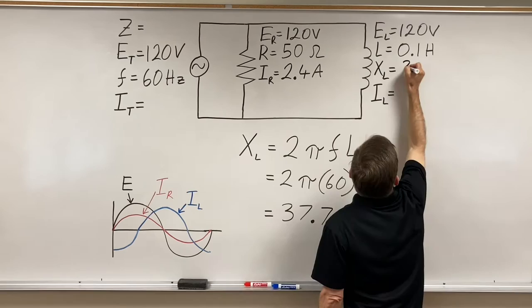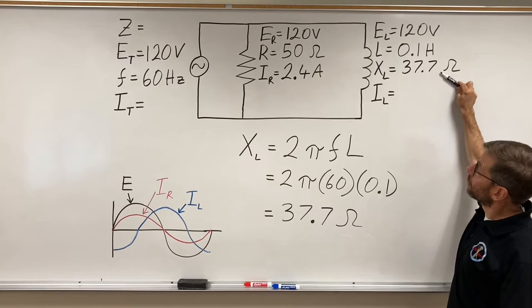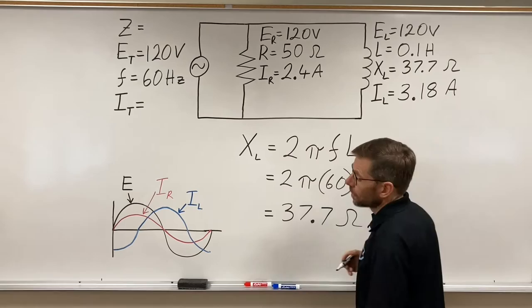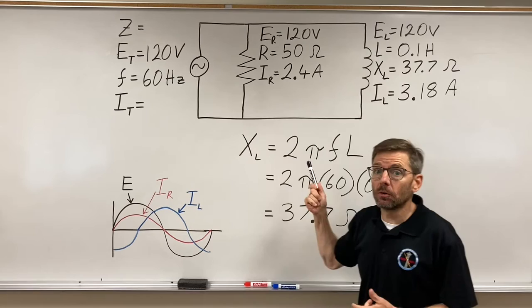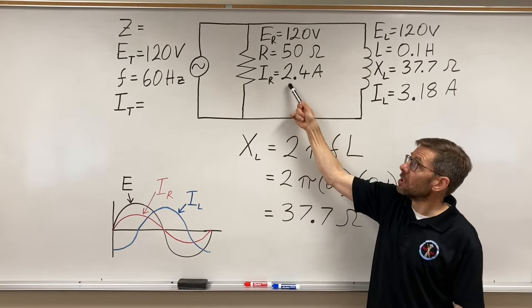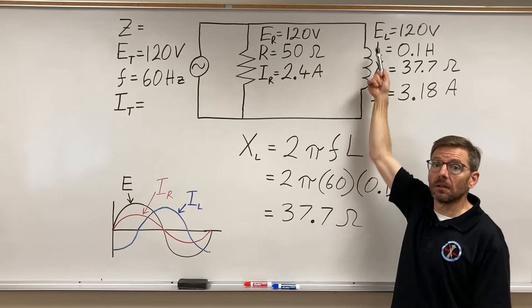Now, 120 volts divided by 37.7 ohms equals 3.18 amps. And as we look at this circuit, we're going to realize that there was more opposition in the resistive branch and so less current flowed. More current flowing in the inductive branch.